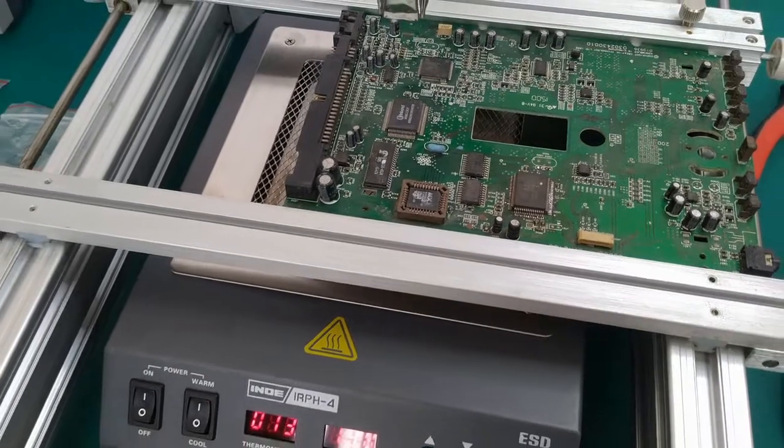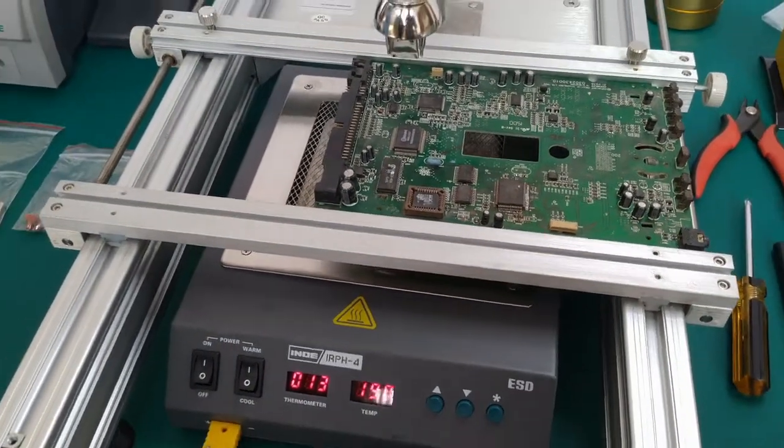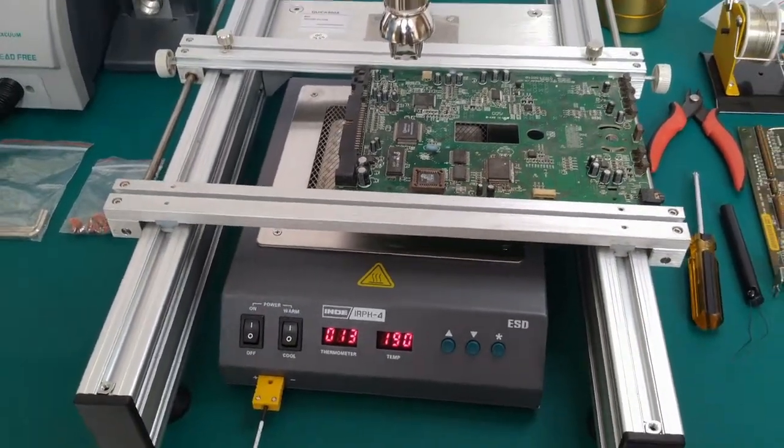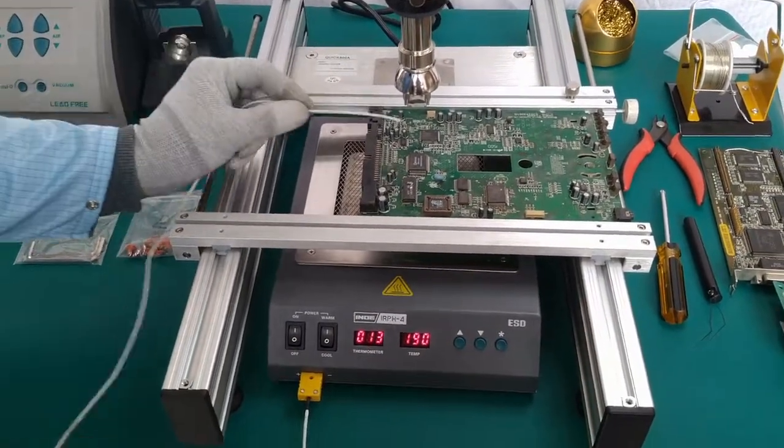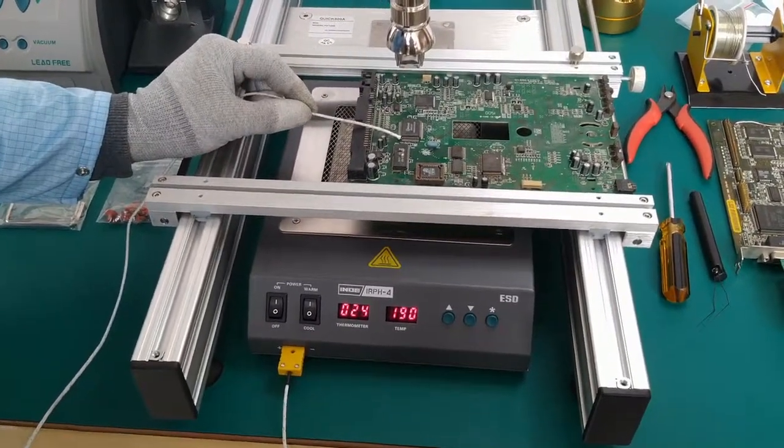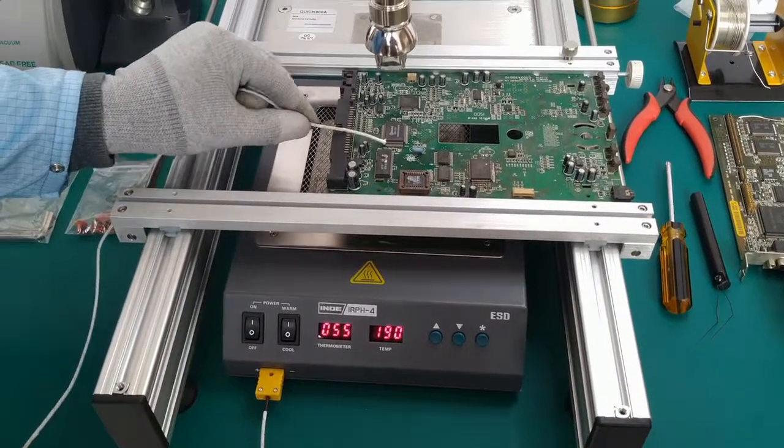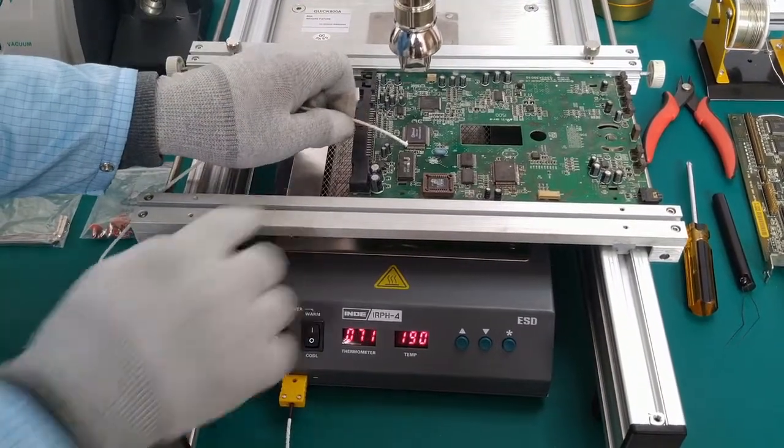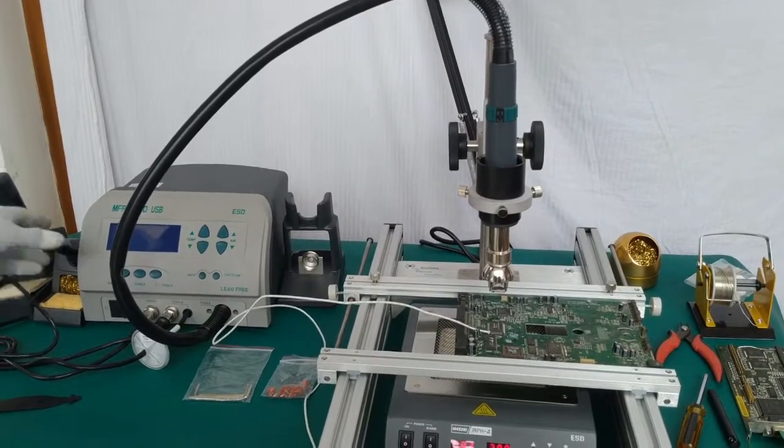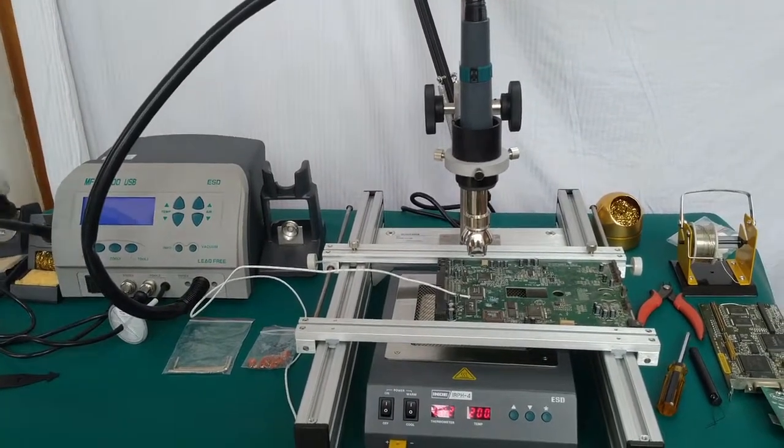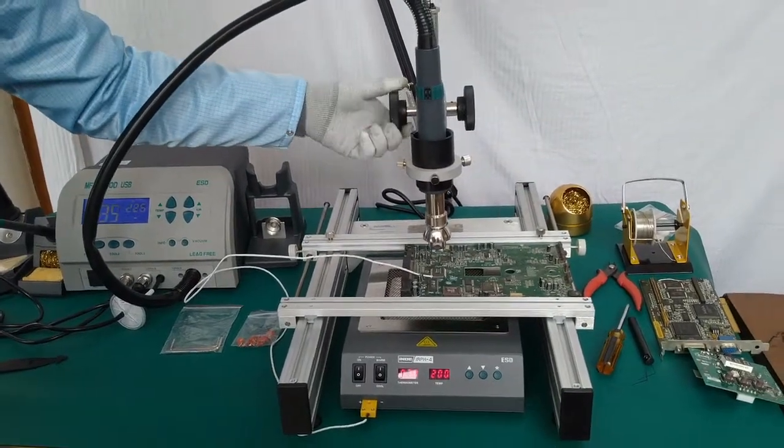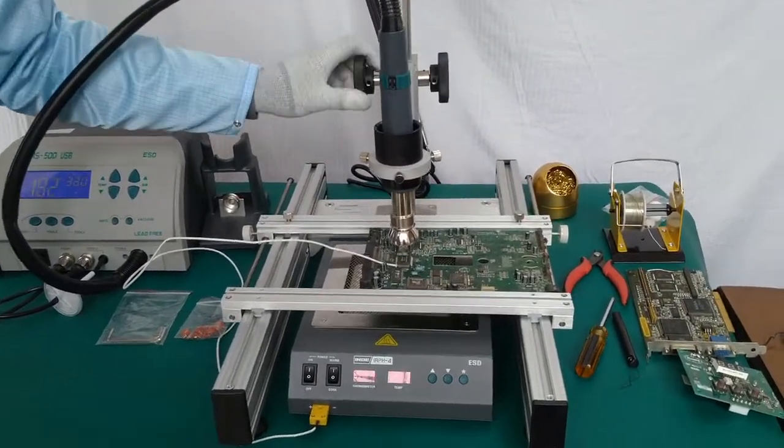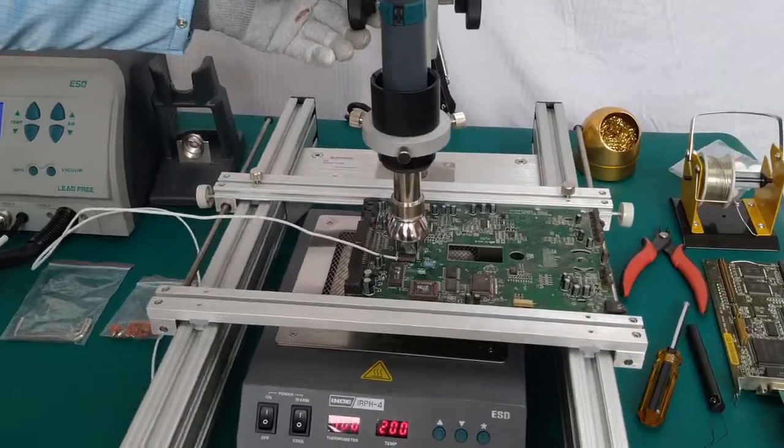We have fixed this PCB in the adjustable PCB holder and we will also place a thermometer close to this SMD IC to measure its actual temperature. We will switch the unit on and move the hot air iron downwards and place it on top of the IC.